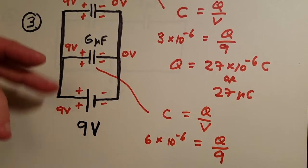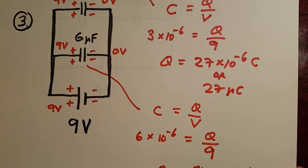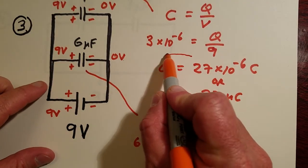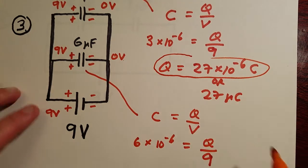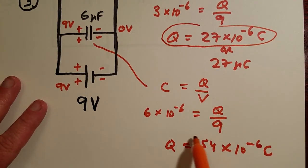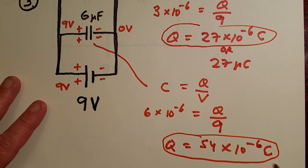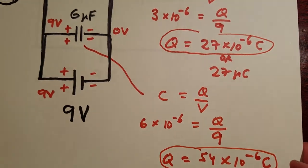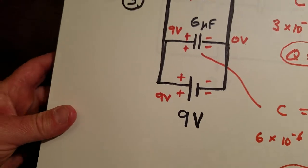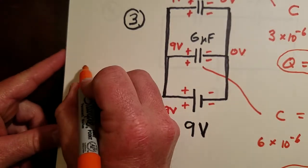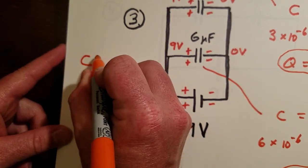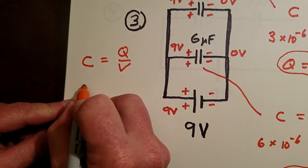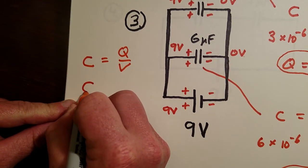Now what's important about this and what you can learn straight away from this when you have capacitors in parallel is notice on the top one we have twenty seven micro coulombs and on the bottom one we have fifty four. So if you look at the total circuit, I'm going to do this off to the side here. If you use C equals Q over V on the entire circuit, the total capacitance we in principle don't know yet.